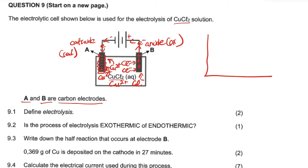Graphically, for electrode A (the cathode), the mass of copper in grams is going to increase over time. At electrode B (the anode), the chloride ions will oxidize to chlorine gas, forming bubbles there.